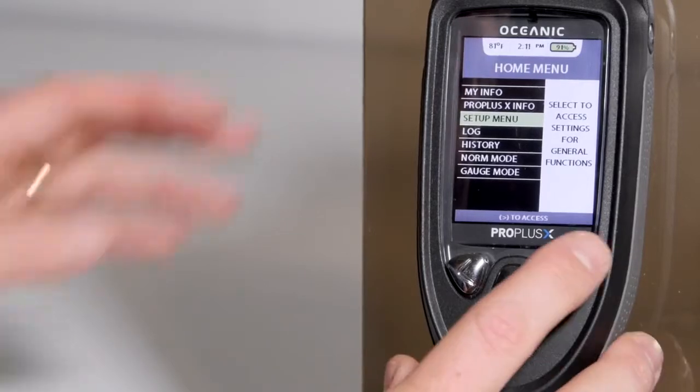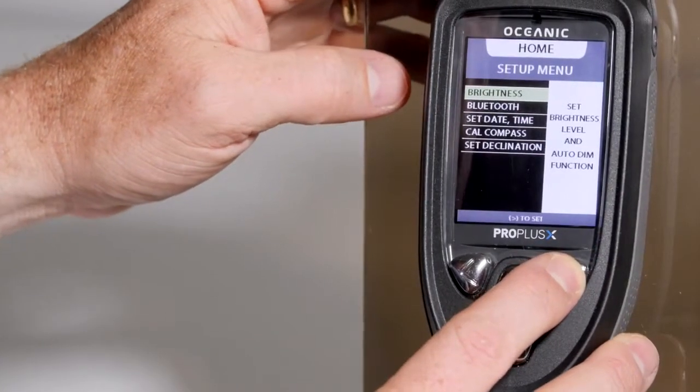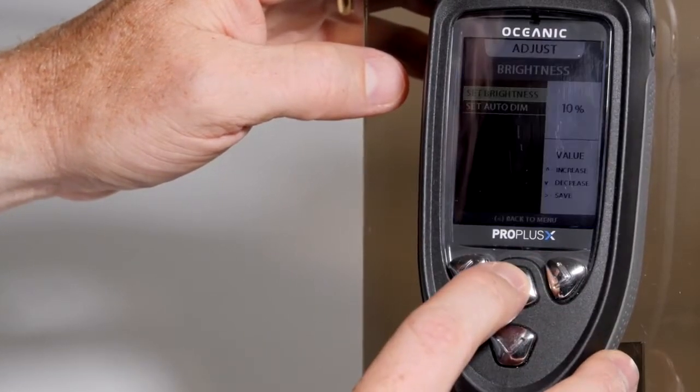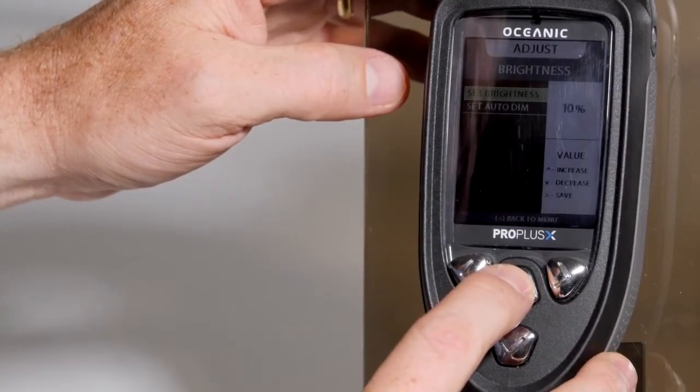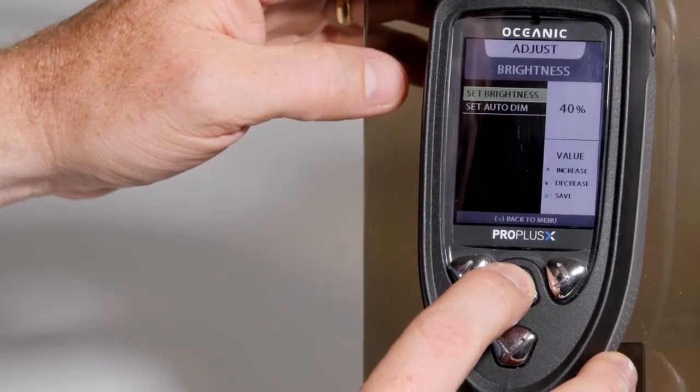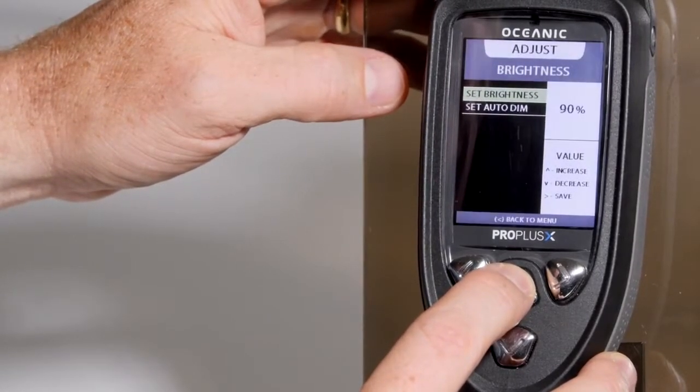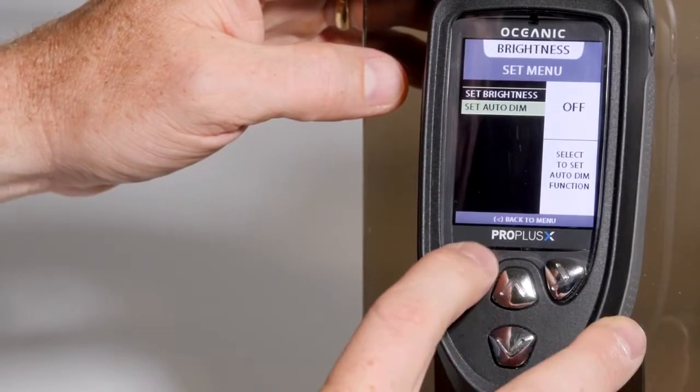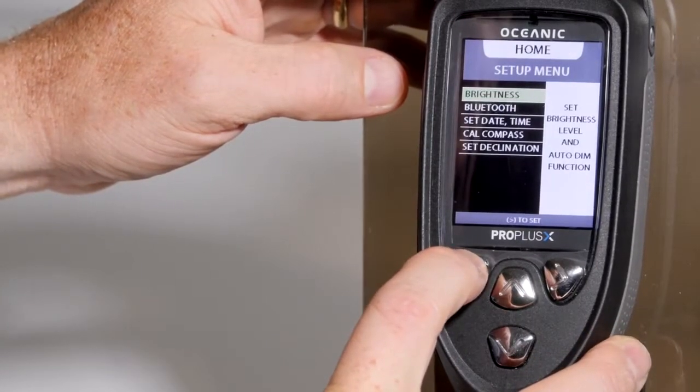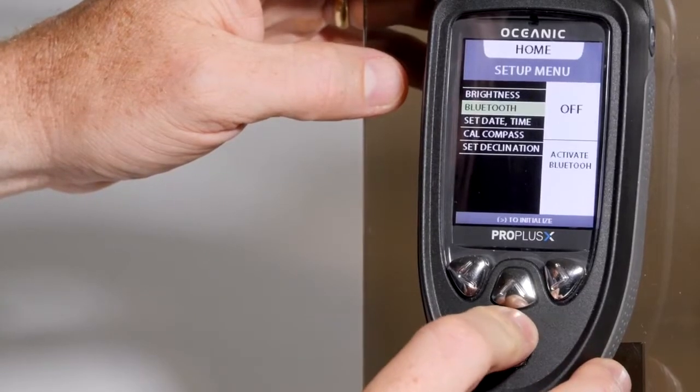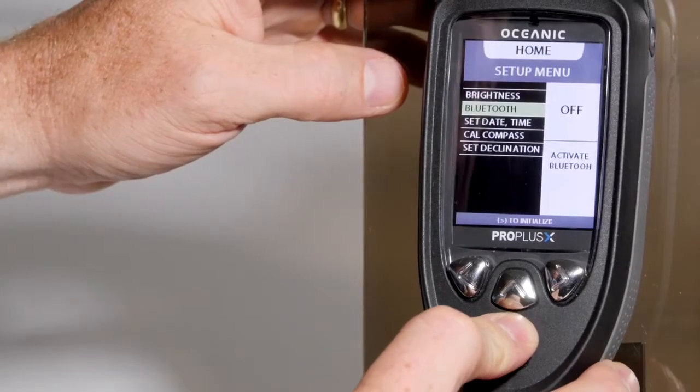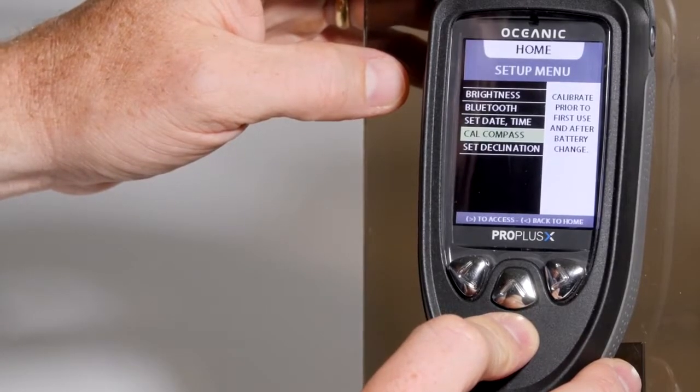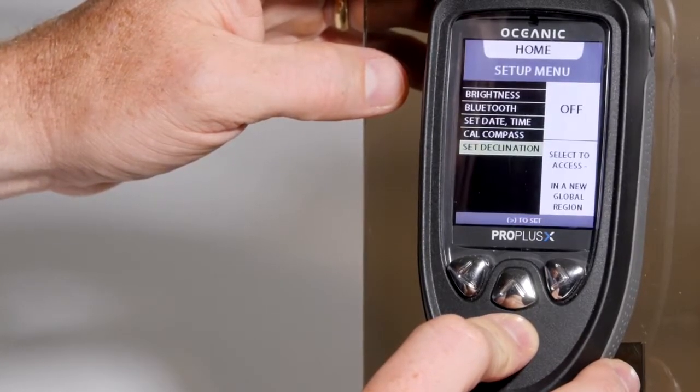From the setup menu, you can enter and set up things such as the brightness control to go from 100% down to 10%. Set the auto-dim. Set up the Bluetooth. Set the date and time. Calibrate the compass. Or set declination.